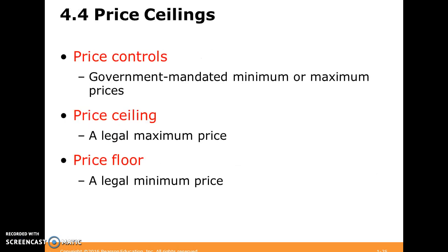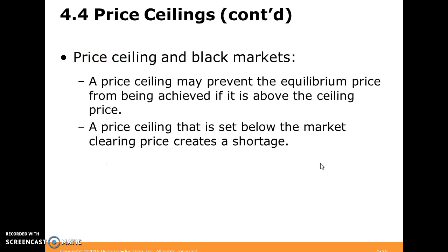Another important and fascinating part of supply and demand is price ceilings. A price control is a government-mandated minimum or maximum price. You could have a price ceiling, which is a legal maximum price, or a price floor, which is a legal minimum price. A ceiling means the price can't go any higher; a floor means it can't go any lower. Price ceilings and floors may prevent the equilibrium price from actually being reached. If the equilibrium price is above the price ceiling, the price gets caught there and can't reach equilibrium.